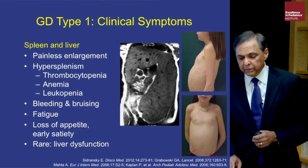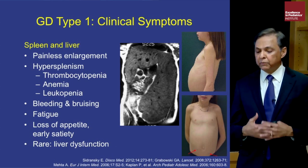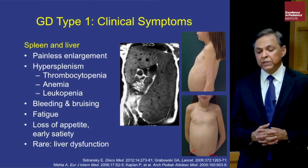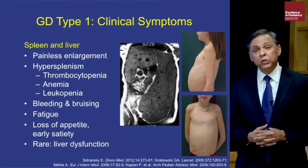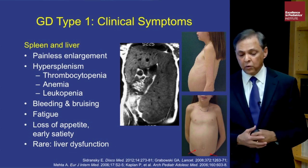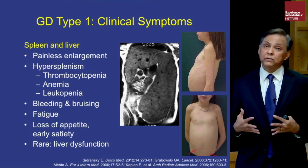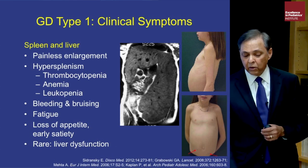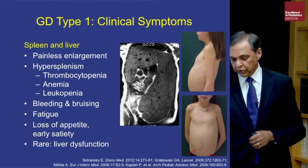Hepatosplenomegaly is very common, often presenting as painless enlargement causing abdominal distention. It is frequently associated with cytopenia — thrombocytopenia, anemia, and leukopenia — and can cause bruising and bleeding, chronic fatigue, failure to perform at school and in sports, loss of appetite due to massive spleen compressing the stomach causing early satiety, and rarely mild abnormalities of liver function tests.